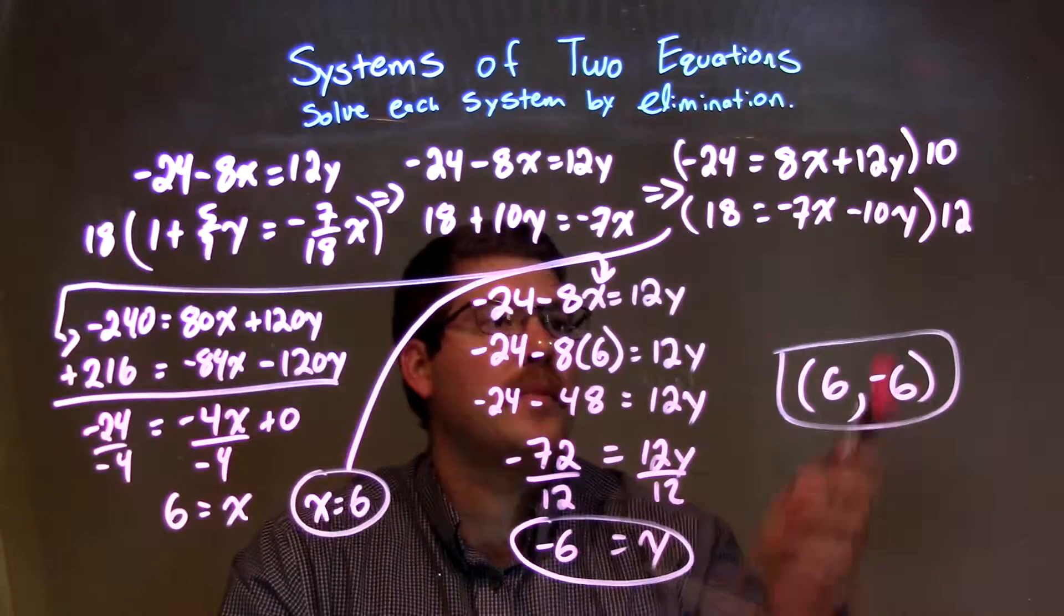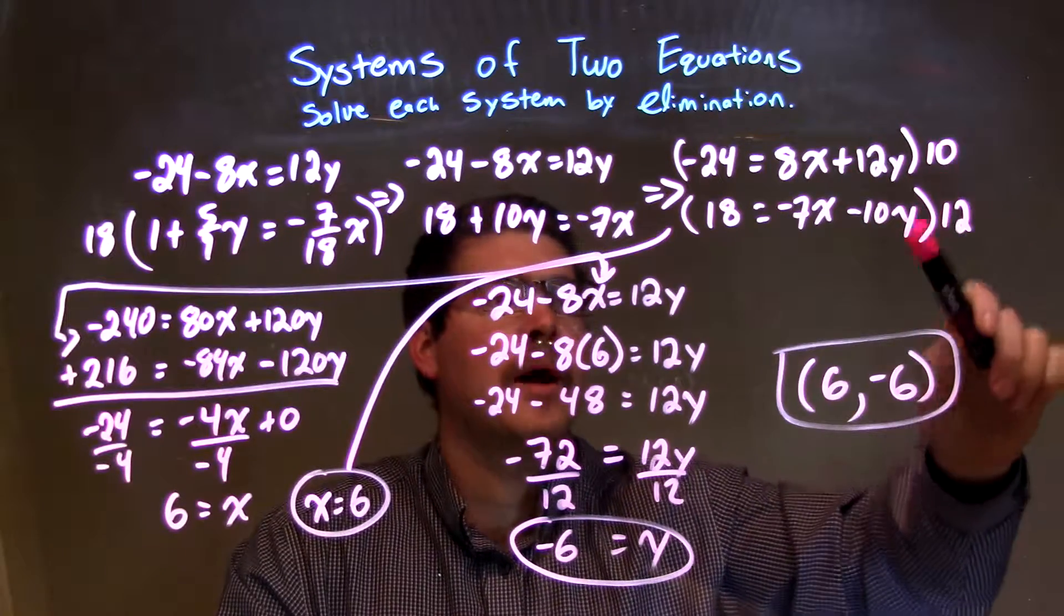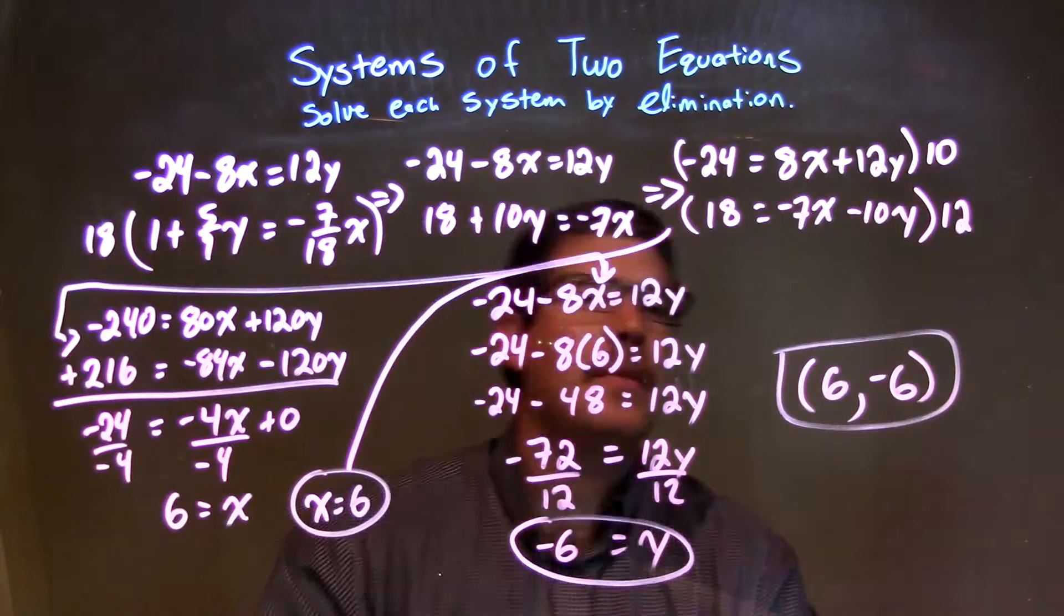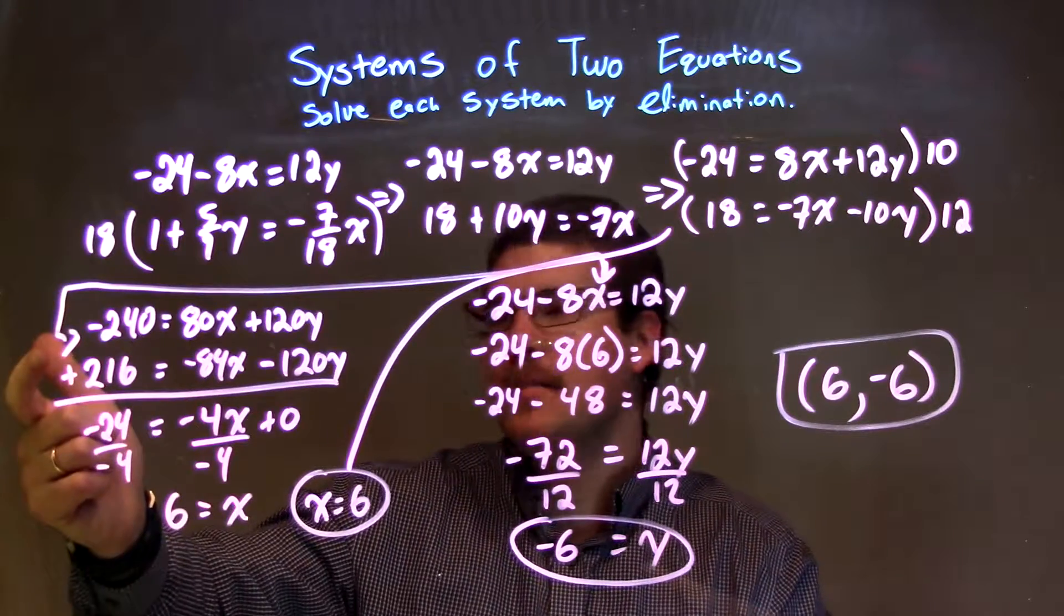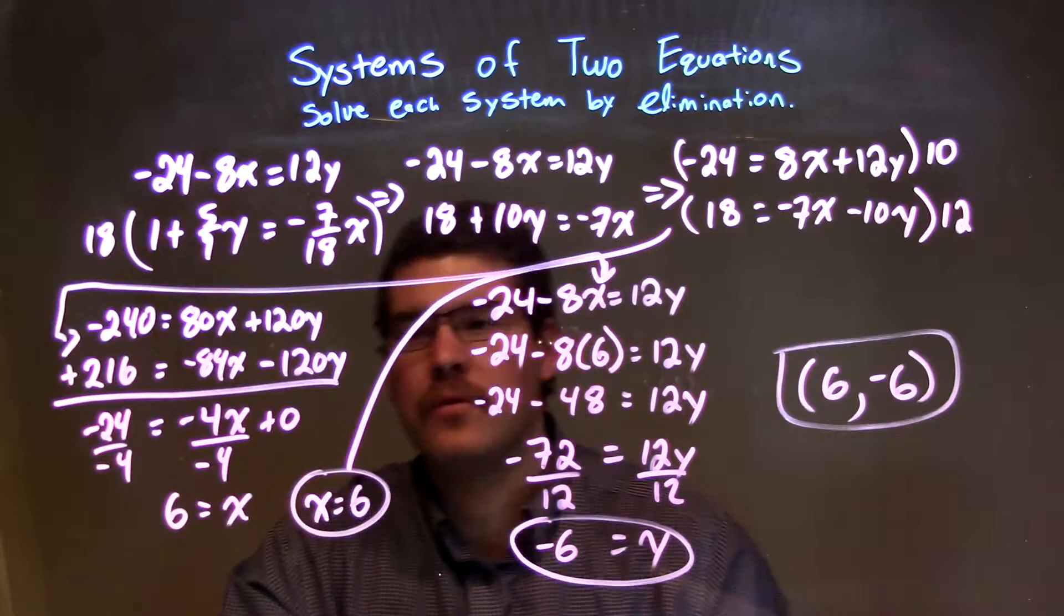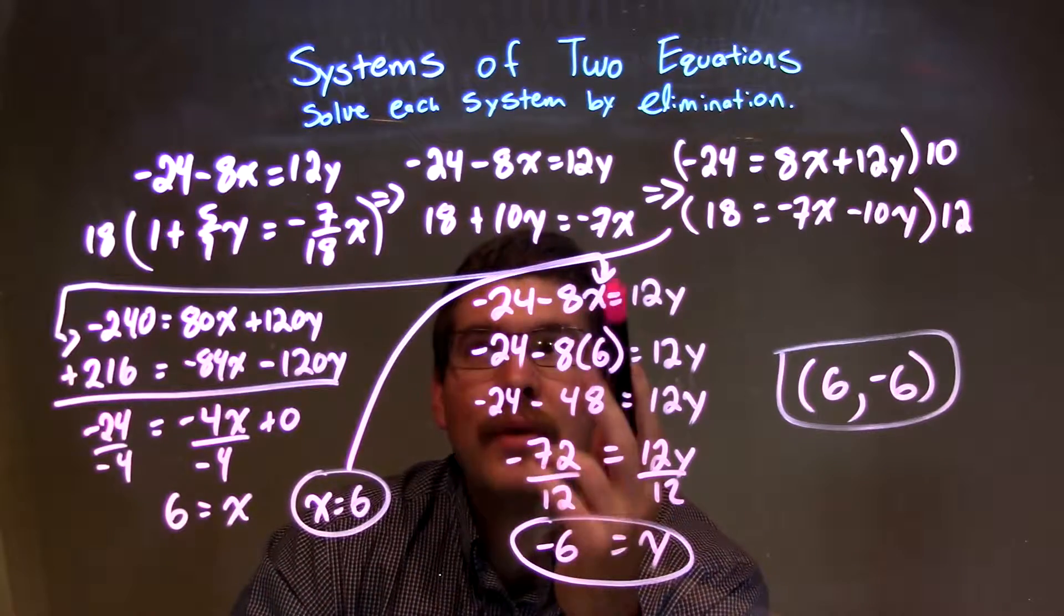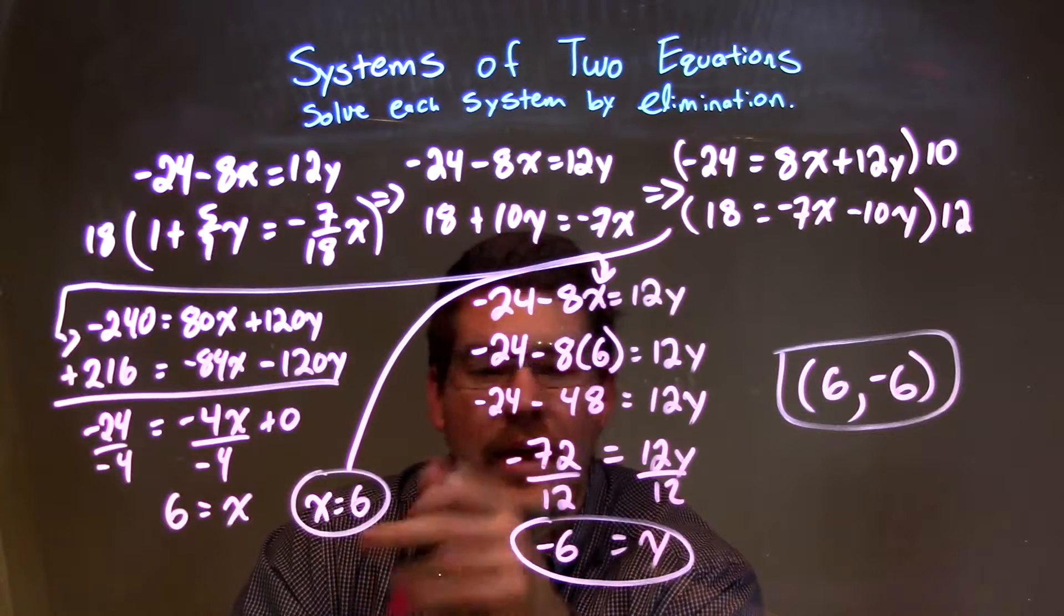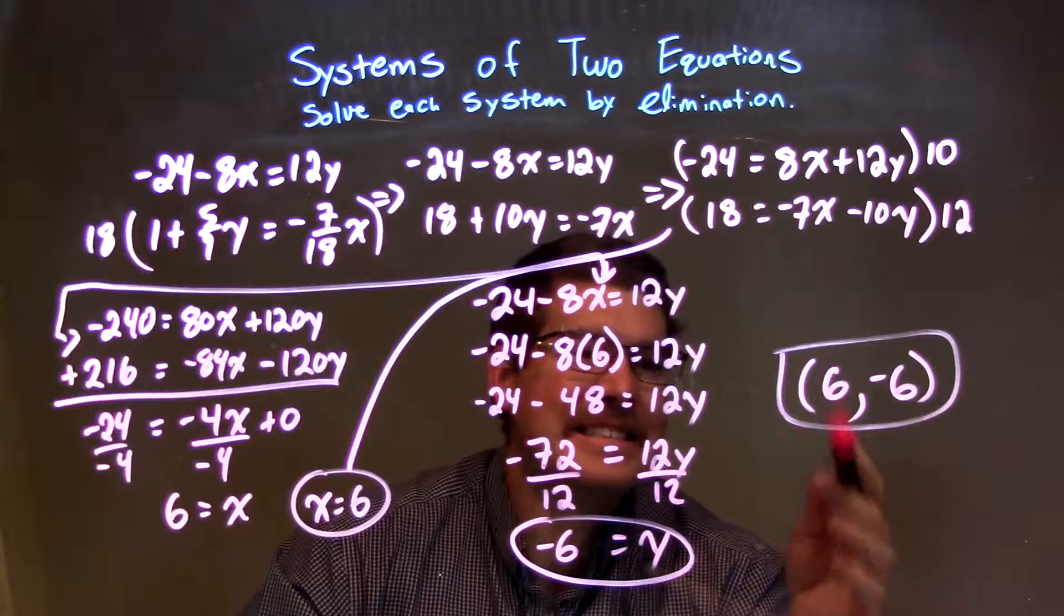From there, I said, let's eliminate the y. I multiplied the top equation by 10, bottom equation by 12, based on the coefficients in front, and made sure that one would be negative, one would be positive. And in doing so, that's what I got. Then, I added two equations, eliminated the y's, and I was left with negative 24 equals negative 4x. Divided by negative 4 to both sides, and x equals positive 6. Plugged that back into my first equation and solved for y and got y to be negative 6. So, our final answer is 6, negative 6.